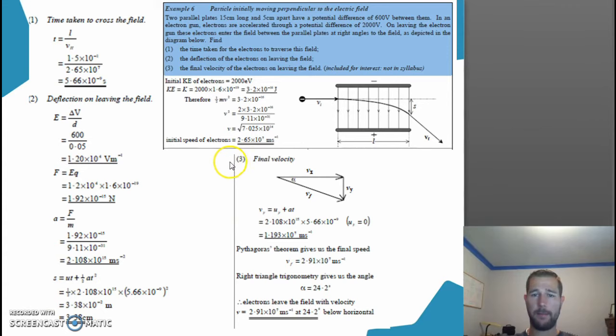This final step, step three, determines the final velocity of the particle, which is simply just a matter of combining the velocity in the x direction and velocity in the y direction in a vectorial form.